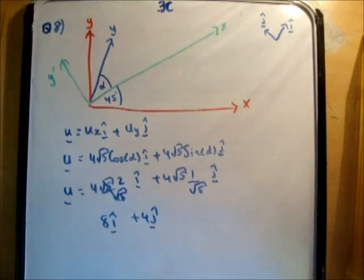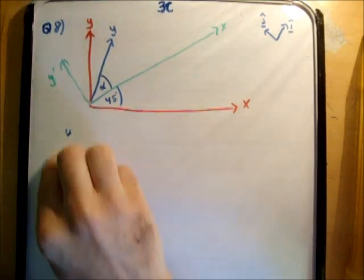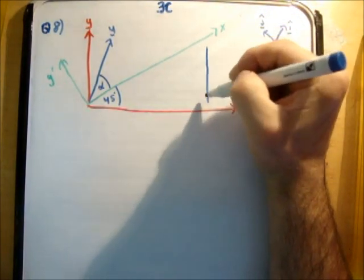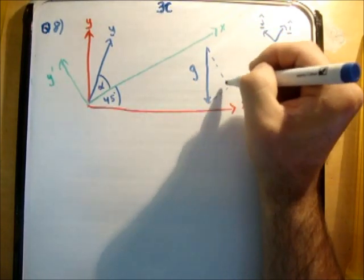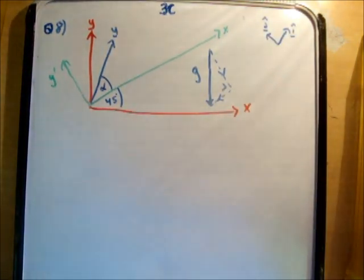The next thing we need to do is work out the gravity vector. Now the gravity vector, of course, acts in the negative y direction, so it acts like this. And we need to resolve it. So we first of all draw a parallel to the y-prime, then to the x-prime. We need to be going in these directions in order to add together to make the gravity vector g.